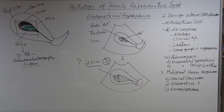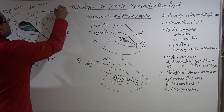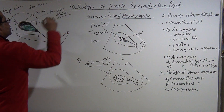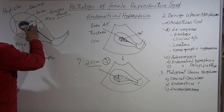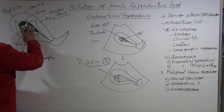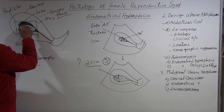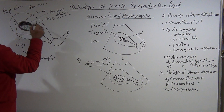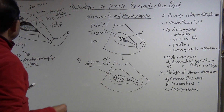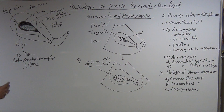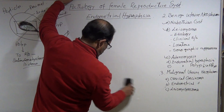Now you can see the polyp — this is the anechoic fluid, and this is the polyp. If it is not a polyp but a growth, then the growth has no pedicle; it has a wide base attached with the endometrium.